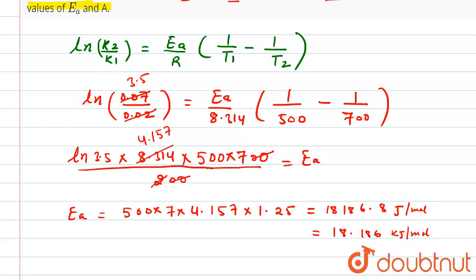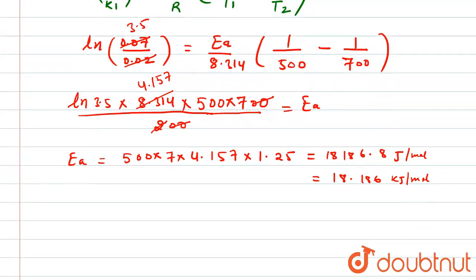Now we have to find the value of A. For that we can use any of the equation, like ln of k1 equals ln of A, or directly if you want to calculate, we know that k is equal to A e to the power minus Ea by RT.